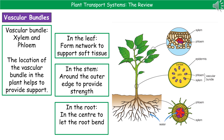The last thing we need to know is about vascular bundles. A vascular bundle is made up of xylem and phloem tissue, and their location in the plant varies depending on which part we're looking at, but their whole purpose is to provide support. In the leaf, they form a network that supports the soft tissues. In the stem, the vascular bundles are arranged around the outer edge, providing strength. In the root, they're in the centre, which allows the root to bend as the plant moves.